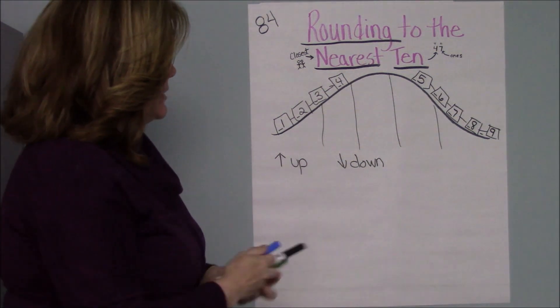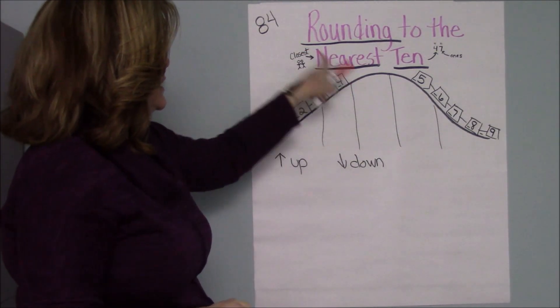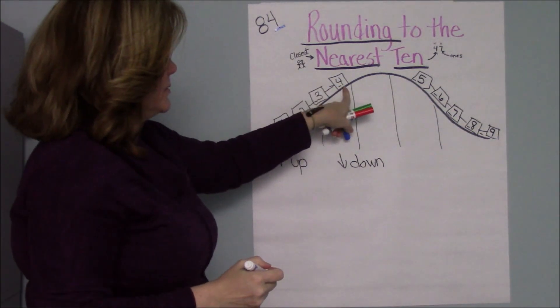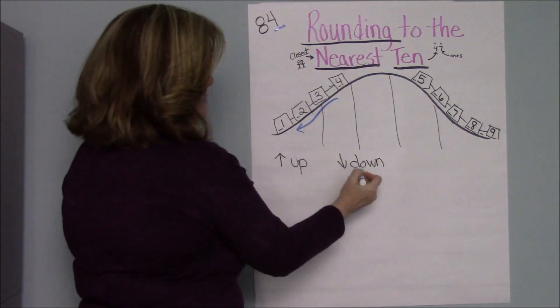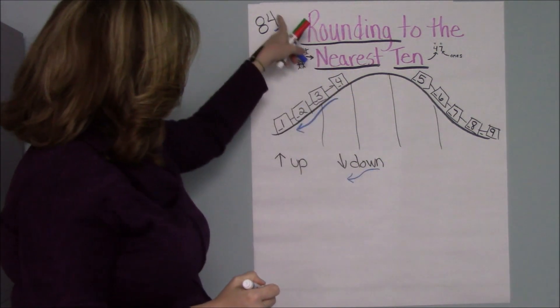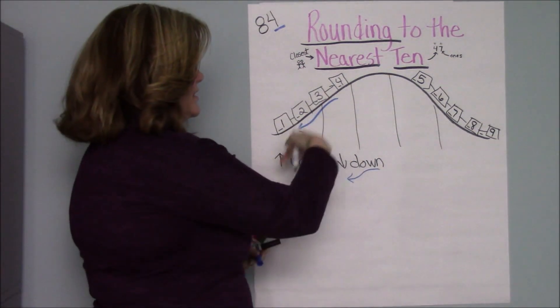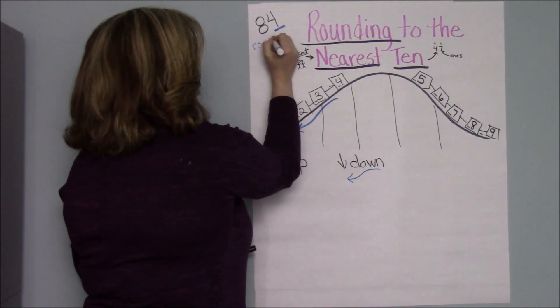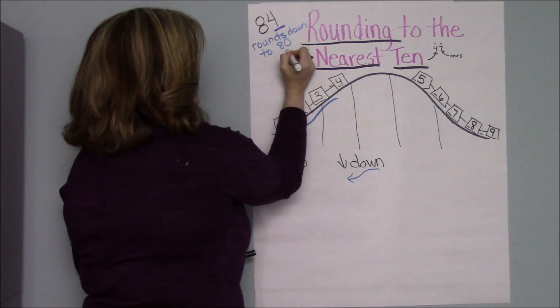So again, you may round up or you might round down. So on our roller coaster, if we have a number like 84 where the passenger here, the second passenger, is a four and we're rounding to the nearest ten, I find my number on the roller coaster. And these folks on the roller coaster are going downhill. They're going down. So if your number has a ones place and the car is going down the hill, then you are going to round down to the nearest tens. So 84 rounds down to 80.